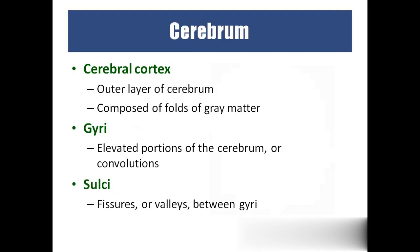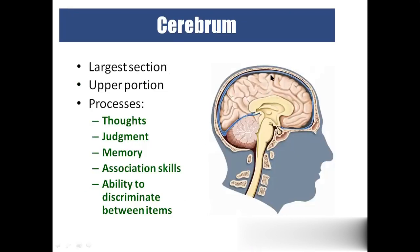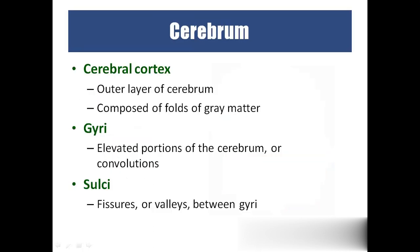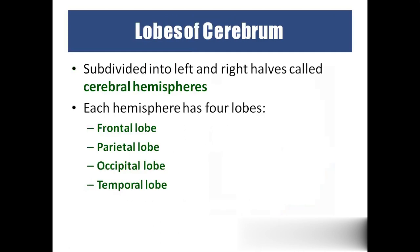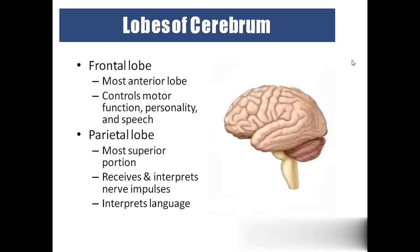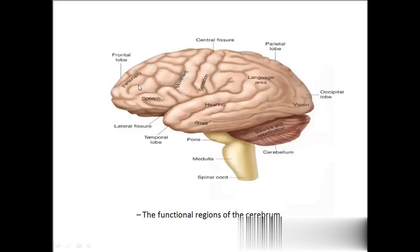The cerebral cortex has elevations called gyri and depressions called sulci. Coming to the lobes of the cerebrum: the right and left cerebral hemispheres are subdivided into four lobes — frontal lobe, parietal lobe, occipital lobe, and temporal lobe. Frontal lobe is for personality, speech, and movement. Parietal lobe is for sensation and language area. Occipital lobe is for vision. Temporal lobe is for hearing and smell.